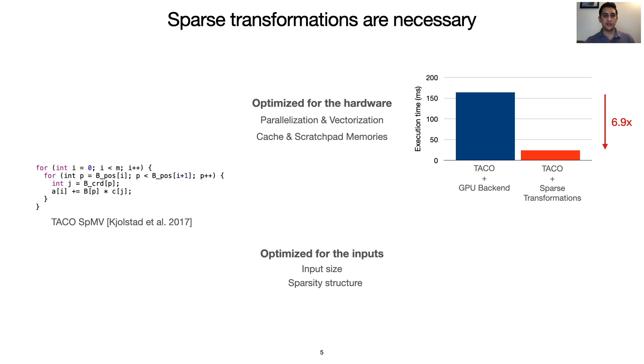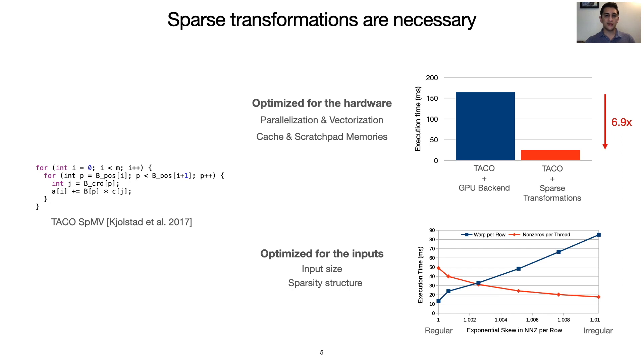For example, we can consider two different GPU SPMV kernels produced by this work. One parallelizes the rows of the input matrix across GPU warps, and the other equally distributes the non-zeroes of the matrix over GPU threads. Due to the trade-offs between load imbalance and synchronization overhead, these kernels perform very differently on matrices with different distributions of non-zeroes per row, but the same number of total non-zeroes. We can see that choosing the wrong optimization strategy for a given input can lead to cases where performance is degraded 3.7 times or improved by more than 4.8 times. This demonstrates that high-performance code is not a one-size-fits-all and must be tuned for the particular context that the code will be run in.